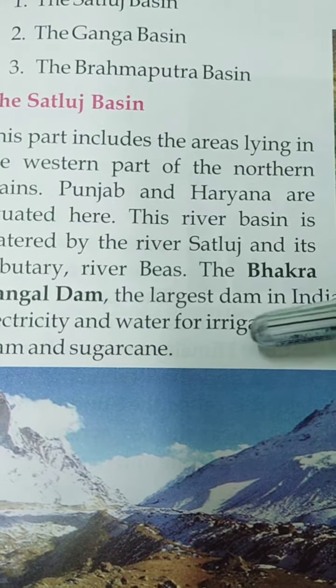The Bhakranangal Dam is the largest dam in India. It is built on the Satluj river. It provides electricity and water for irrigation. Electricity is produced by the dam, and irrigation means watering the fields where crops are grown.